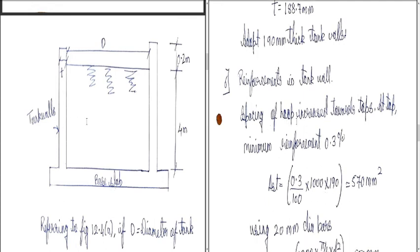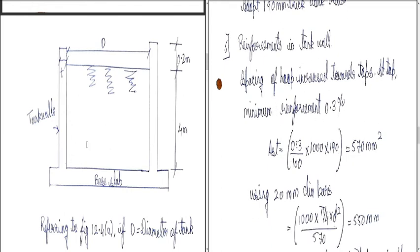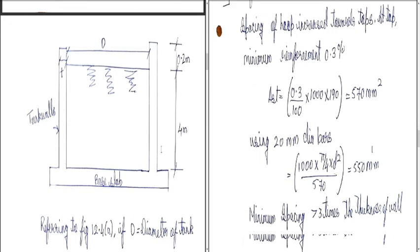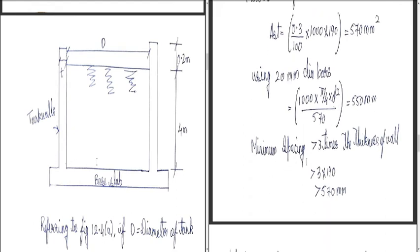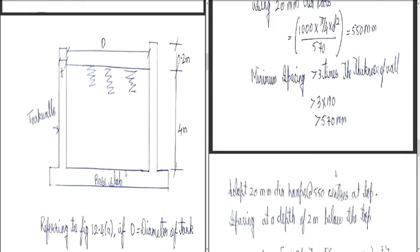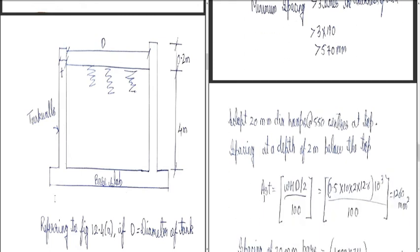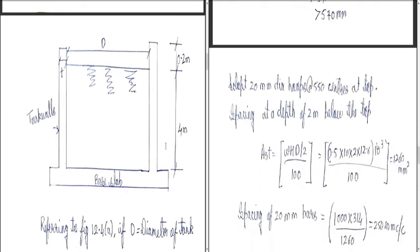For reinforcement in the tank wall, the hoop spacing increases towards the top. At the top, minimum reinforcement is 0.3%, so Ast = (0.3/100) × 1000 × 190 = 570 mm²/m. Using 20 mm diameter bars, spacing = 1000 × (π/4 × 20²) / 570 = 550 mm. Minimum spacing must not exceed 3 × wall thickness = 3 × 190 = 570 mm; 550 mm governs. Adopt 20 mm diameter hoops at 550 mm centre-to-centre at the top.